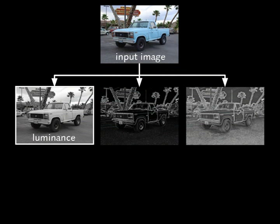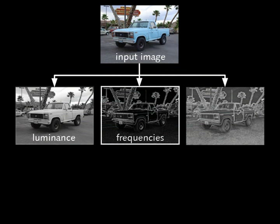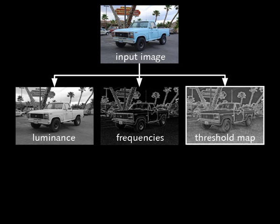The average image luminance is calculated out of the luminance channel. Out of the frequency channel, the amount of high frequencies is calculated. By computing the threshold map, the maximum non-perceivable luminance variation at each image pixel is acquired.